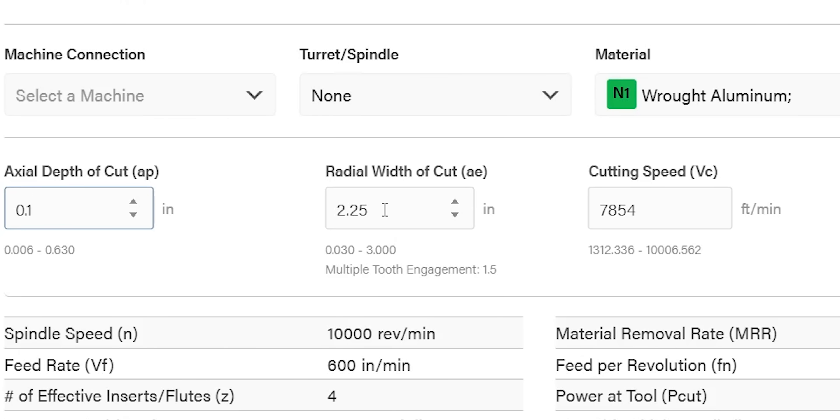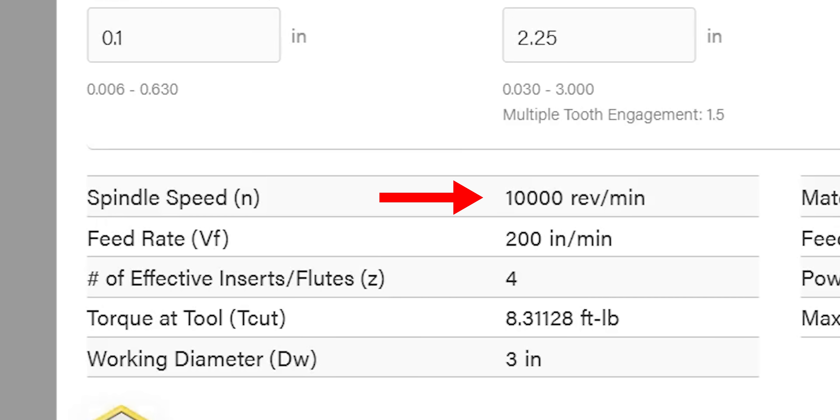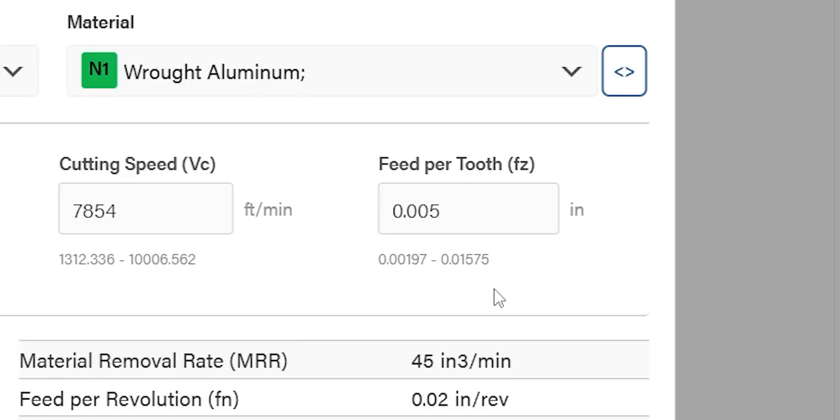Our radial width of cut, I have it set at 2.25 and you'll see why in a minute, but that is our biggest radial width of cut. We've got our surface footage here, which works out to 10,000 RPMs. Right now I've got it at 5 thousandths per tooth feed rate, which is our 200 base level.